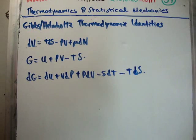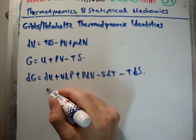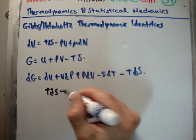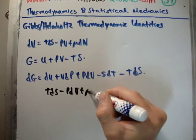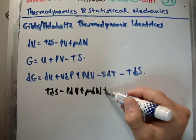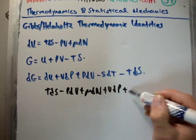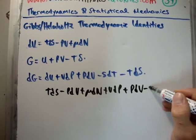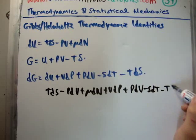Okay, so we get that. Once again, we're going to plug in for our dU. So we get TdS minus PdV plus μdN. We're still going to have our other terms of VdP plus PdV minus SdT minus TdS.